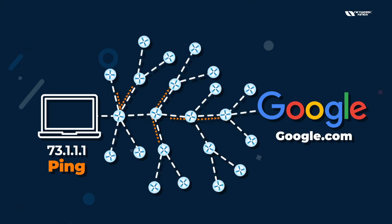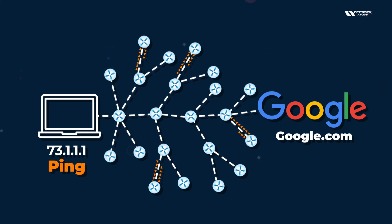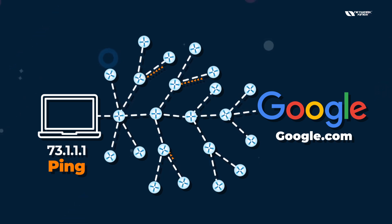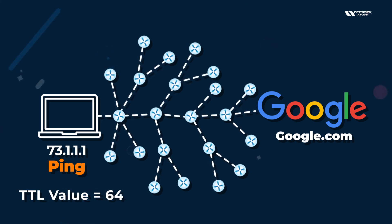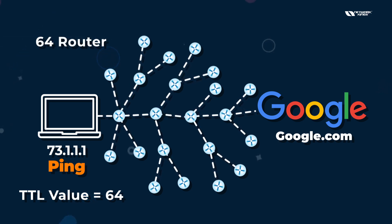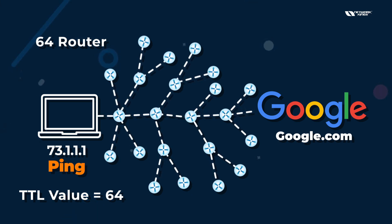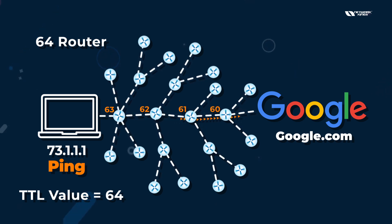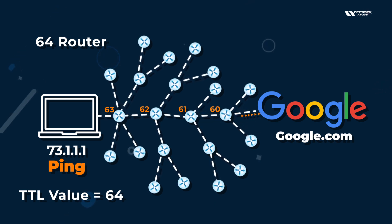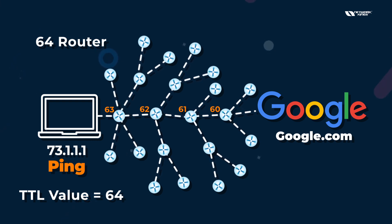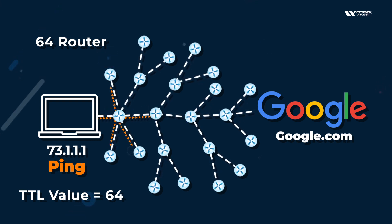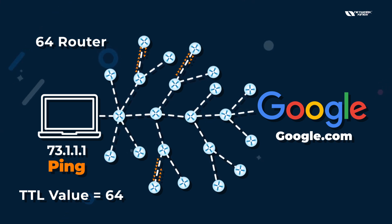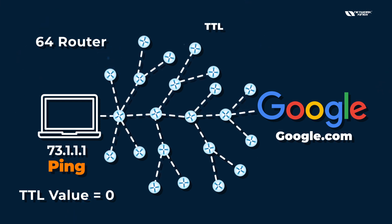If you try to ping 73.1.1.1 and this server is not available on the internet, the router will keep searching where the packet is. The TTL value acts like an expiry date. If I send a ping with TTL value 64, routers will forward the packet up to 64 routers, because each router decrements the value by one: 63, 62, 61... and so on. If the destination is not available, once the TTL value reaches 0, the packet will be discarded. So TTL value is to avoid loops.